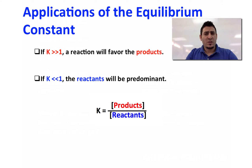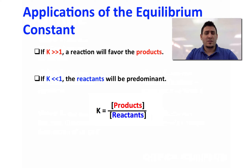So if the expression is greater than 1, this means that the numerator, which is the concentration of products, is greater than the concentration of reactants.